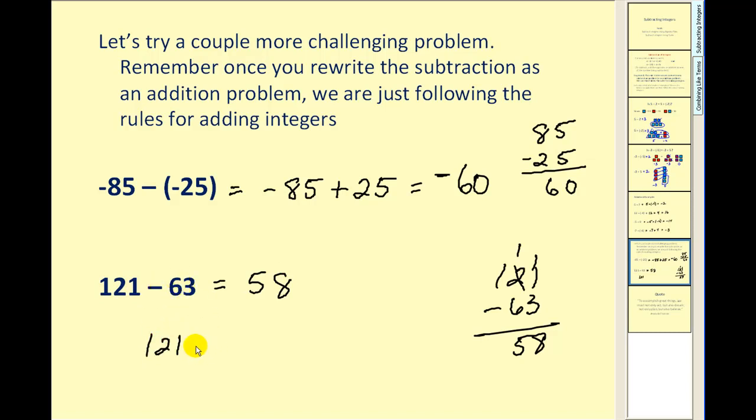Of course it wouldn't be wrong to keep it consistent and rewrite this as 121, subtracting 63 dollars is the same as adding a loss of 63 dollars or adding a negative 63. Again, if we follow the rules for adding signed integers, of course we would still get 58.